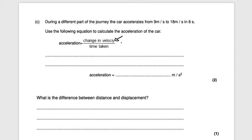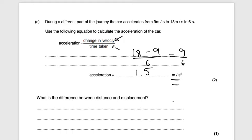The change in velocity is going to be the final velocity subtract the initial velocity, so we would do 18 subtract 9, and then divide that by 6. So 9 divided by 6 gives you an answer of 1.5 meters per second squared — that's the unit for acceleration, and that would be worth two marks. Type that into your calculator to check your answer.